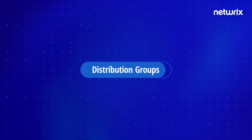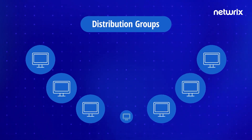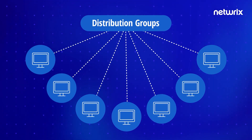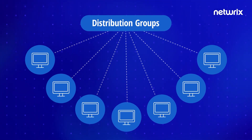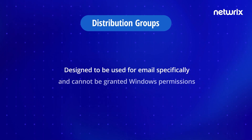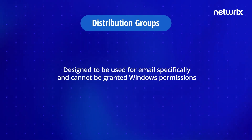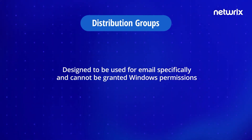Distribution groups are designed to combine users together so that you can send emails collectively to a group. Active Directory distribution groups are designed to be used for email specifically and cannot be granted Windows permissions.